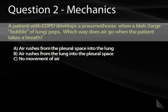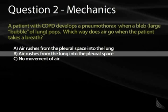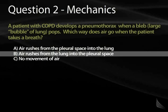Would we expect air to rush in from the pleural space into the lung, or air to rush from the lung into the pleural space? If you've taken care of a patient with a pneumothorax, the answer is B — air rushes out of the lungs into the pleural space. With each breath we create negative pleural pressure, so there's a gradient for air to go from the lung into the chest wall, leading to collapse of the lung.